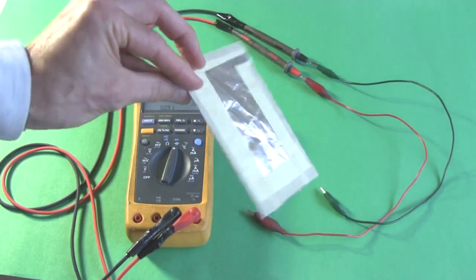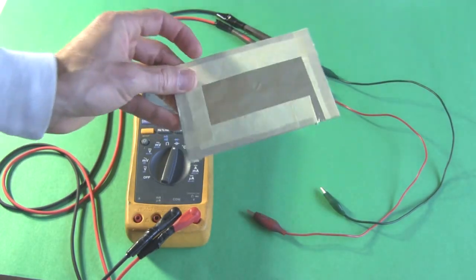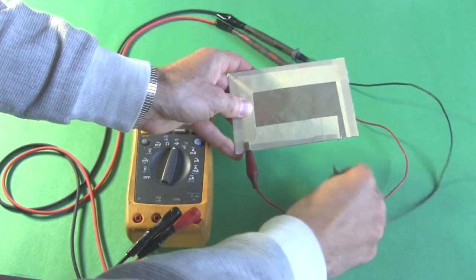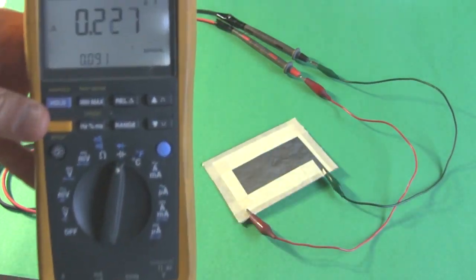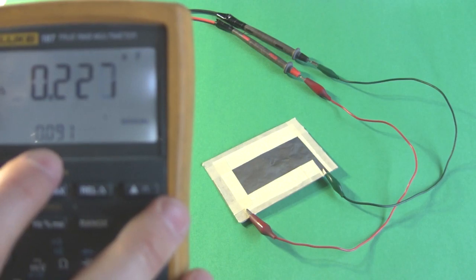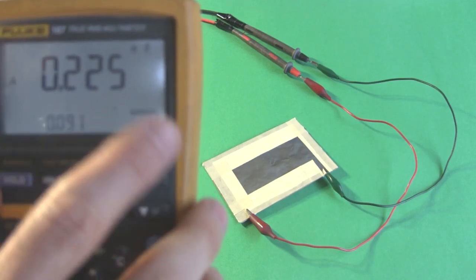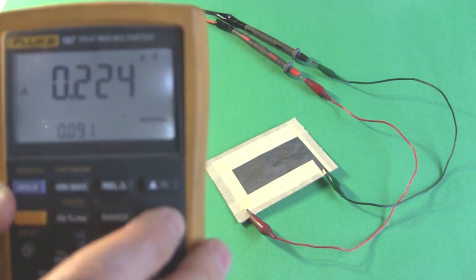I have a little capacitor here, which is a piece of cardboard with two pieces of aluminum foil on either side. And you can see its capacitance is around 0.225 nanofarads, which is 225 picofarads.